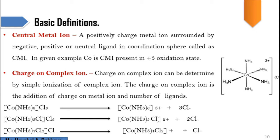Some species are present inside the coordination sphere and some are present outside. Species present outside the coordination sphere undergo ionization. When we do the ionization, we get the hexamine cobalt 3-positive complex plus 3 Cl-negative. When we do a test, we get a positive result only for Cl — not for cobalt or NH3, because they are inside the coordination sphere. This is how coordination compounds undergo ionization.